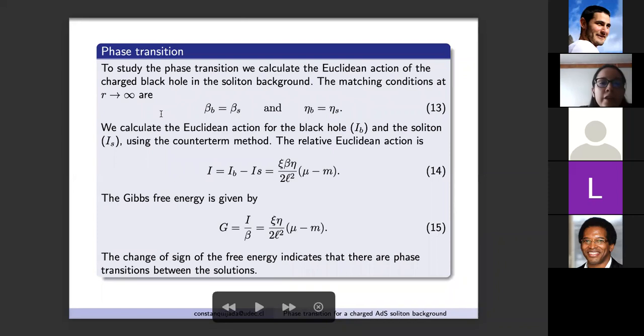We calculate the Euclidean action for the black hole with the soliton solution as background. For this we need that both solutions have the same geometry at the boundary, so the matching conditions when r goes to infinity are given by equation thirteen. We calculate the Euclidean action for the black hole and the soliton using the counterterm method. The Euclidean action for the black hole with the soliton solution as thermal background is given by equation fourteen.